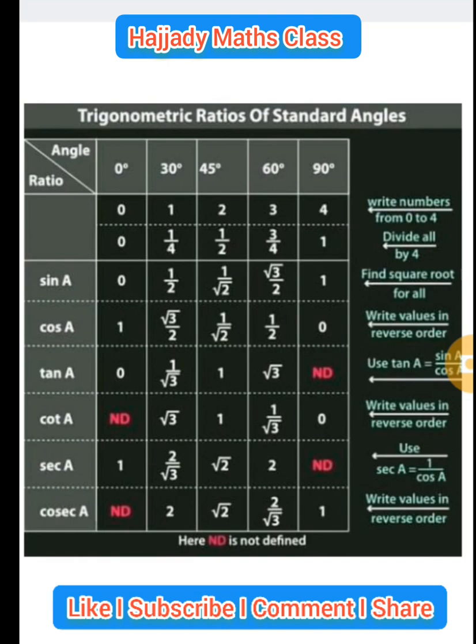Secondly, you divide all by 4. So 0 over 4 gives 0. 1 over 4 gives 1 over 4. 2 over 4 to the lowest term gives 1 over 2. 3 over 4, this is it. And 4 over 4 gives 1.